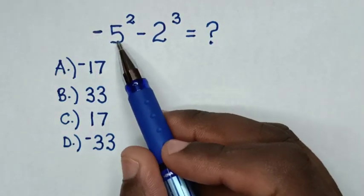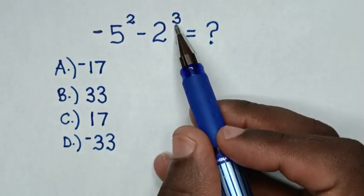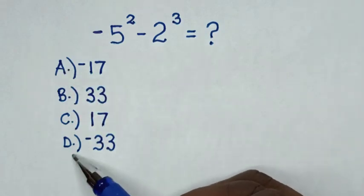Hello, how to solve negative 5 square minus 2 cube by selecting the answers in A, B, C, or D?